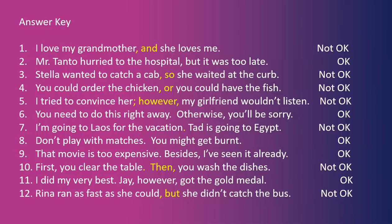Three — the original was not okay. Corrected: "Stella wanted to catch a cab, so she waited at the curb." Number four — not okay. Correction: "You could order the chicken, or you could have the fish." Number five — not okay. Correction: "I tried to convince her; however, my girlfriend wouldn't listen." It's also possible to use a period before "however" and start a new sentence with a capital H. Number six was okay: "You need to do this right away. Otherwise, you'll be sorry."